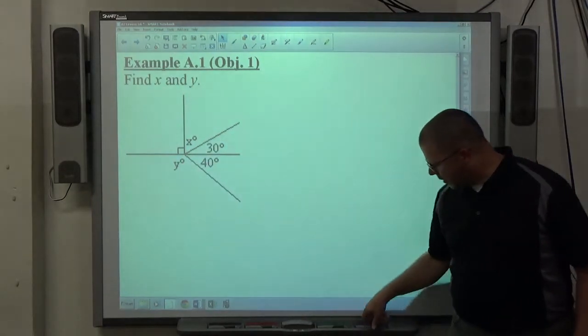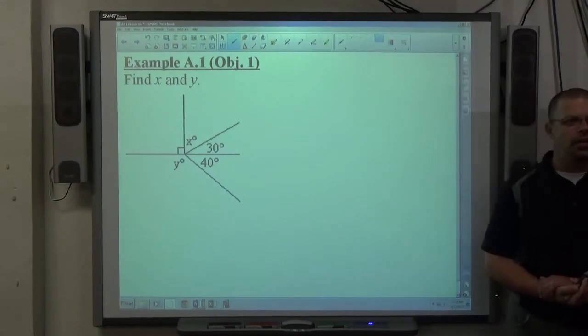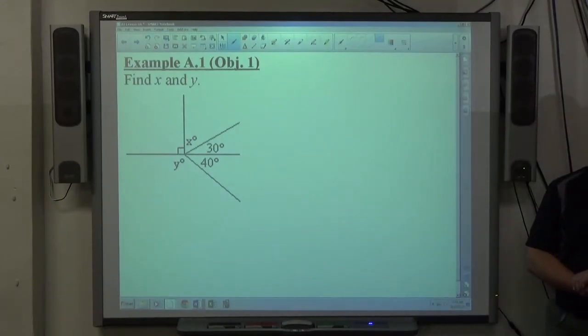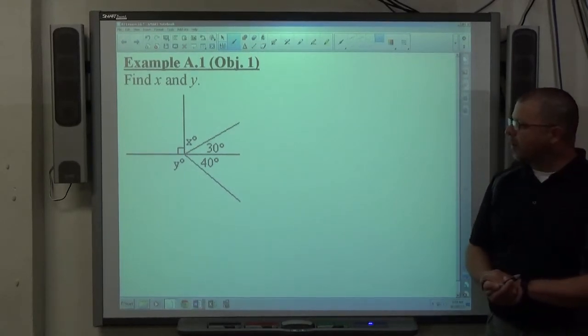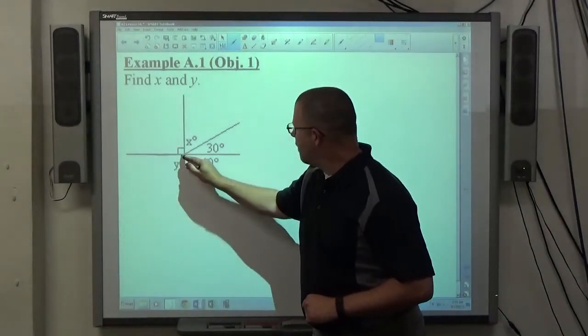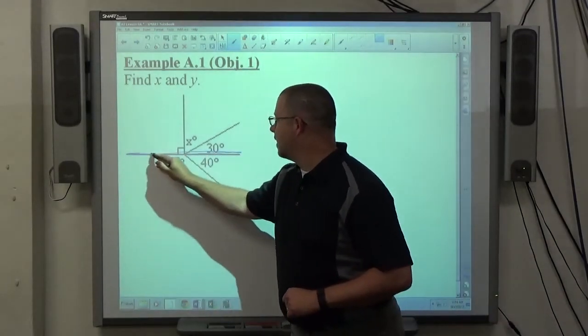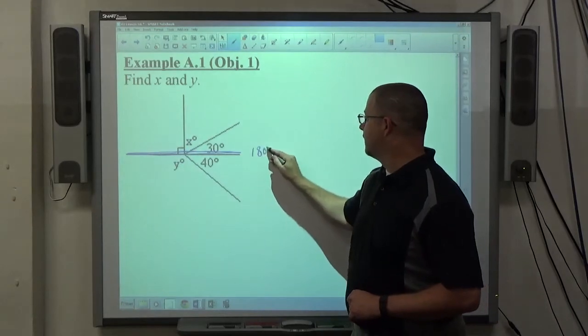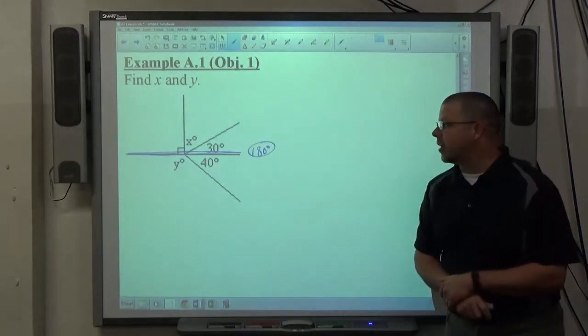And what we want to use is specific knowledge we have with straight lines, right angles, and so on, in order to determine the values of x and y. So, what do we know about a straight line, how many degrees it has in it? 180 degrees, right?